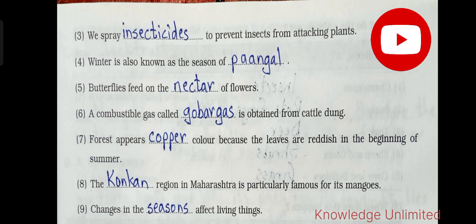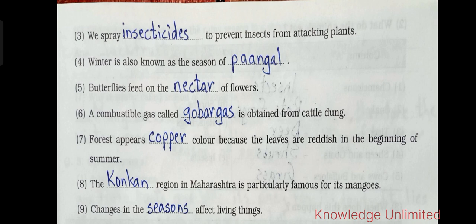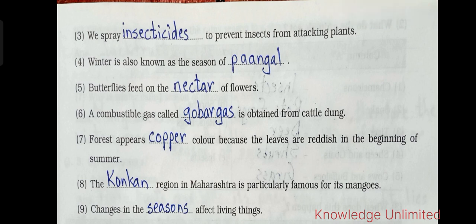Fifth one: butterflies feed on the dash of flowers — the answer is 'nectar.' Butterflies feed on the nectar of flowers. Sixth one: a combustible gas called dash is obtained from cattle dung — the answer is 'gobar gas.'